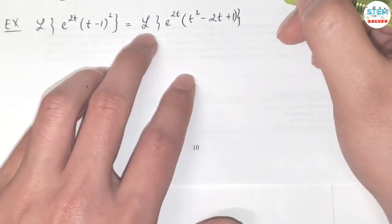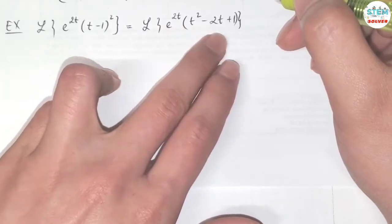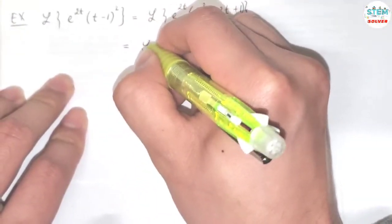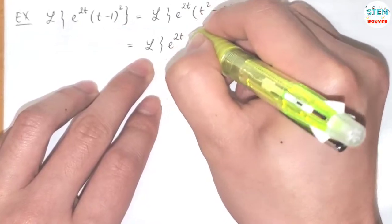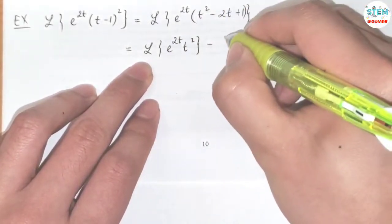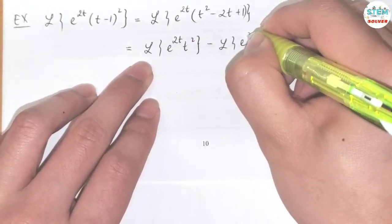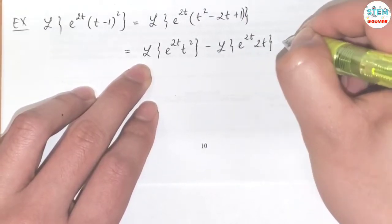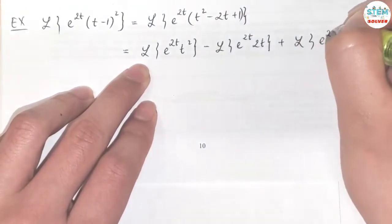Now I'm going to apply the L. I'm going to distribute this to every single term and apply the L at the same time. So I have L of e to the 2t times t squared minus L of e to the 2t times 2t plus L of e to the 2t times 1.